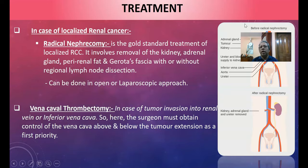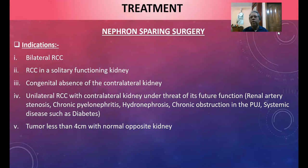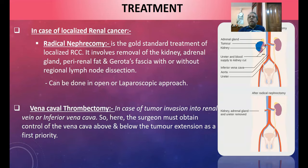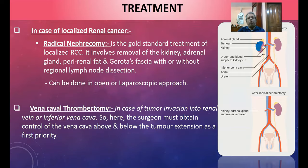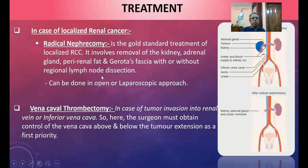Regarding treatment of localized renal cancer: radical nephrectomy is the gold standard treatment for localized renal cell carcinoma. It involves removal of the kidney, adrenal gland, perinephric fat, Gerota's fascia, with or without regional lymph node resection. This can be performed as open, laparoscopic, or robotic surgery.